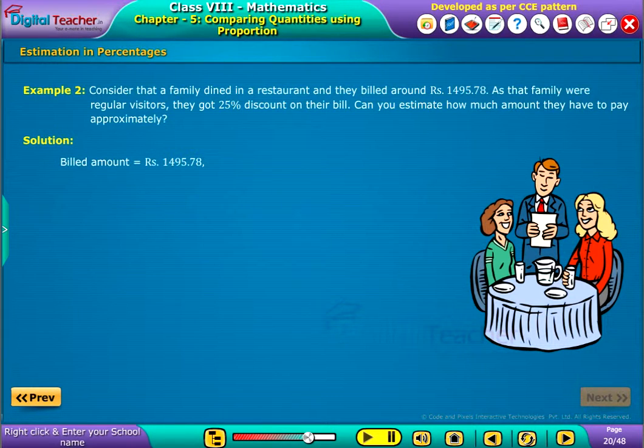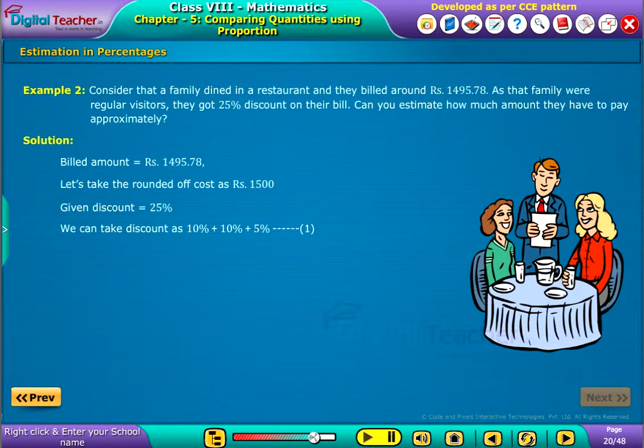Solution: Billed amount equal to Rs. 1495.78. Let's take the rounded-off cost as Rs. 1500. Given discount equal to 25%. We can take discount as 10% plus 10% plus 5%. Consider it as equation 1.